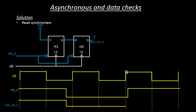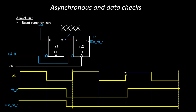Now comes the point where you receive the active edge of the clock, where both flops receive the active edge of the clock and you receive a reset end very close to the active edge of the clock. In that case, there will still be a metastability problem. Wherever there is an active edge of the clock, this particular flop goes into a metastability state and the output for flop RS1 is unknown — shown as a cross. We can't predict what the output is because it has gone into a setup violation.